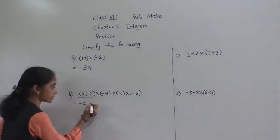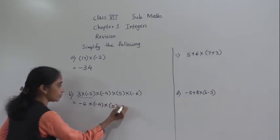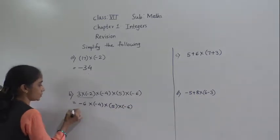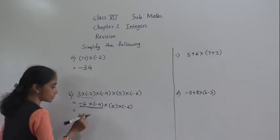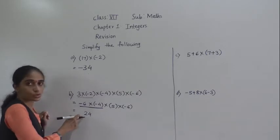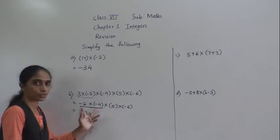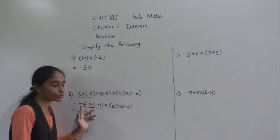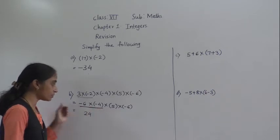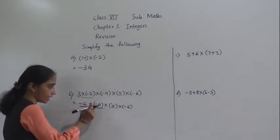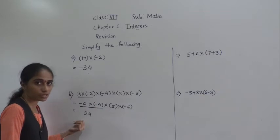So remaining numbers we have to write as it is: multiplied by minus 4, multiplied by 5, multiplied by minus 6. Now if you will see, these both the numbers are negative — 6 fours are 24. Now both the numbers are negative. In multiplication, both the numbers are negative, so their product will be positive. Minus 6 and minus 4: 6 fours are 24, and both the numbers have negative signs, so their product will be positive.